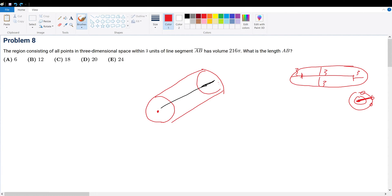First of all, well, the volume of a cylinder is you would apply πr²h. So what is the radius? Well, the radius is three because it has to be within three units, right? And what is the height? Well, the height is just the length of AB.